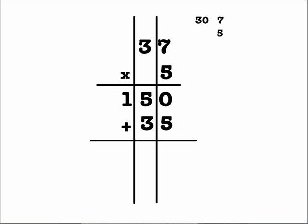So very easily, 0 plus 5 is 5, 5 plus 3 is 8, 1 plus nothing is 1, and you get a final answer of 185.